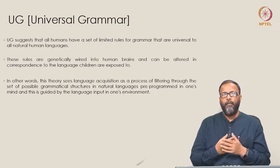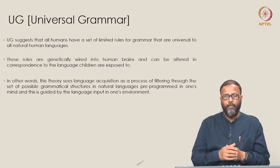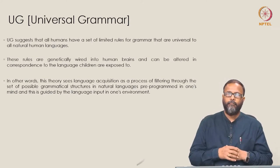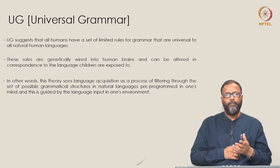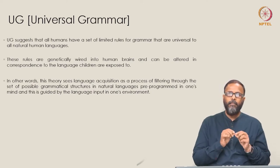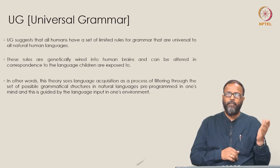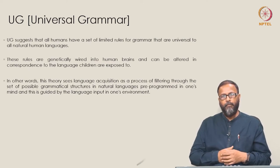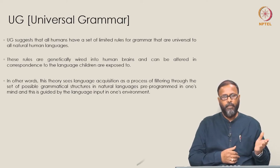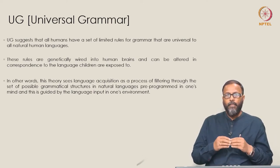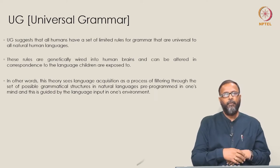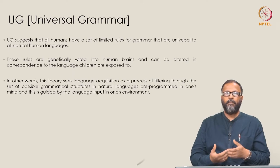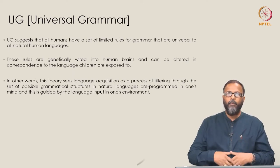These universal principles include, for example, subject, verb, and object — all languages have subject, verb, and object arranged in a particular sequence, and the verb must agree with the subject. This is a universal principle. But where is the variation? Why is English different from Hindi, or Tamil different from Hindi, or Telugu different from Chinese? Subject, object, and verb as categories are available to all human languages, and there is a relationship between them — subject-verb agreement is a universal principle. But how it happens is language-specific.